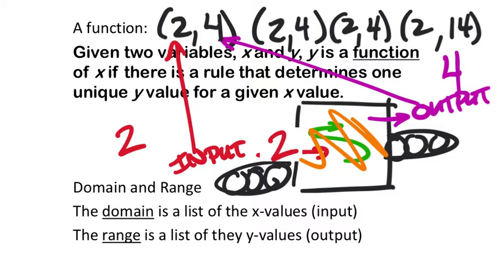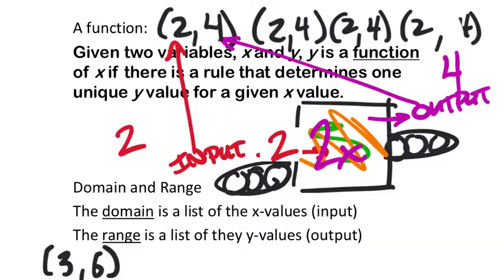The rule could be something like 2x — two times x. You put in your input x and out spits a 4. If it was actually functioning, you'd never get 14 — you'd always get a 4. You could put in a 3 and get a 6 out.